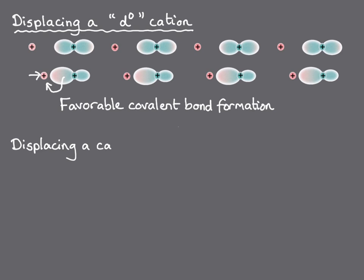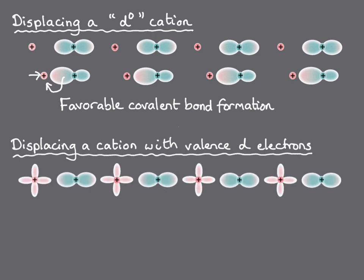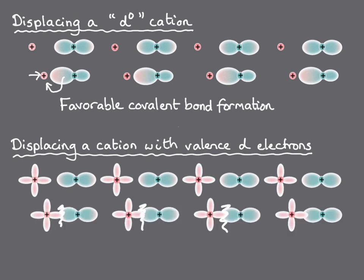If the d orbitals on the cation are already filled with electrons, as sketched here, then electrons can't readily transfer from the anion to the cation. In addition, there is an unfavorable Coulomb repulsion between the valence electrons, which gets worse as the ions get closer together. Both of these factors conspire to favor the centrosymmetric arrangement of ions for non-d0 cations.